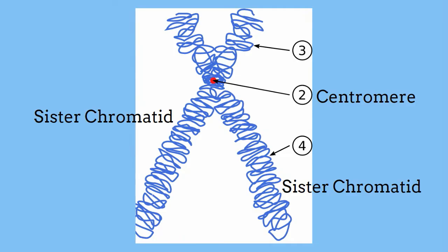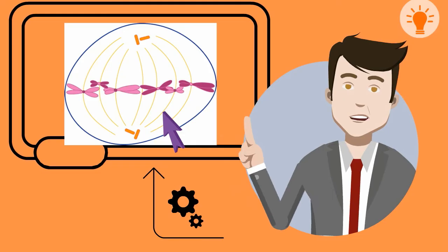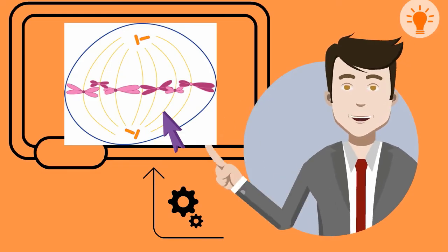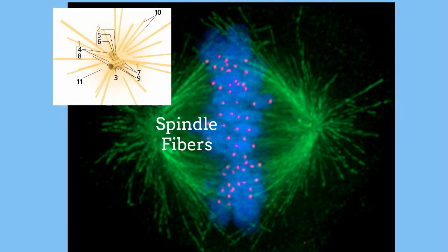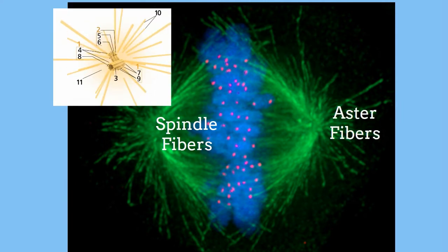During metaphase spindle fibers appear. These fibers can create something called the spindle apparatus. It consists of spindle fibers, centrioles, and another fiber called aster fibers. In plants the centrioles are missing.